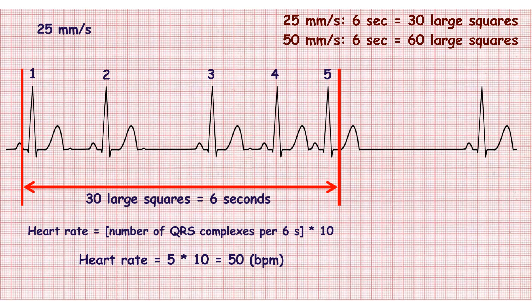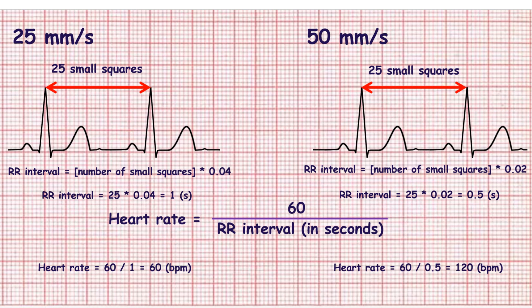If ECG speed is 50 millimeters per second, 60 large squares correspond to 6 seconds. Another method of determination of the heart rate is based on the calculation of the RR intervals. First, you should calculate the RR intervals.